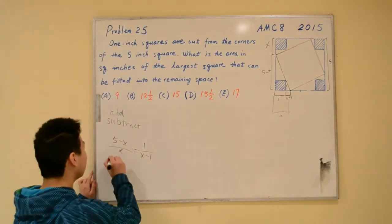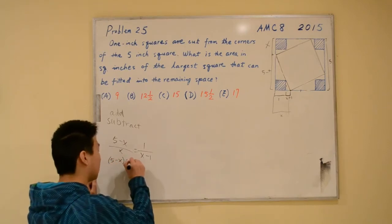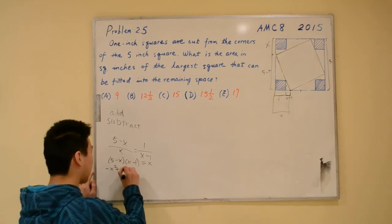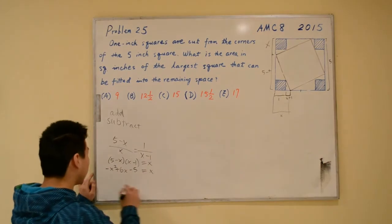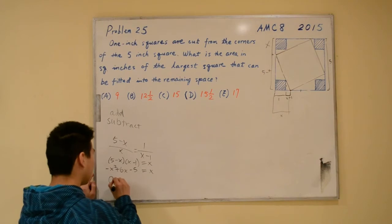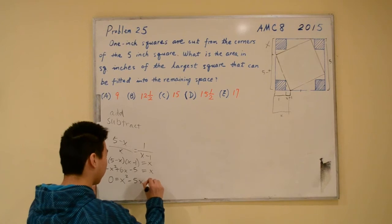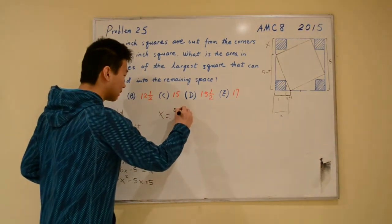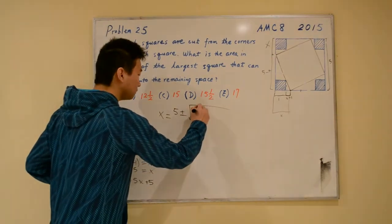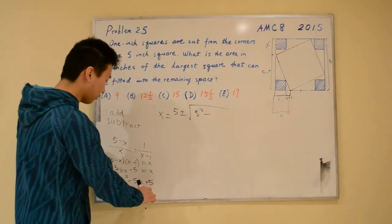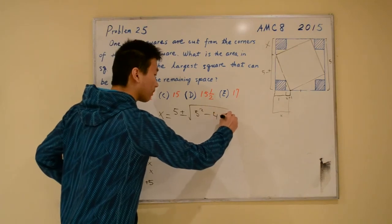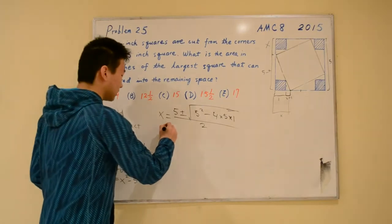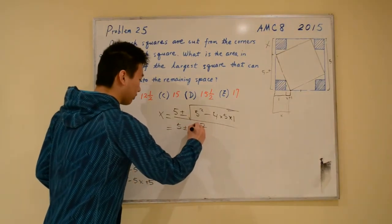We cross-multiply to get (5 minus x)(x minus 1) equals x. This simplifies to negative x squared plus 6x minus 5 equals x, which further simplifies to 0 equals x squared minus 5x plus 5. By the quadratic formula, x equals (5 plus or minus the square root of 5) over 2.